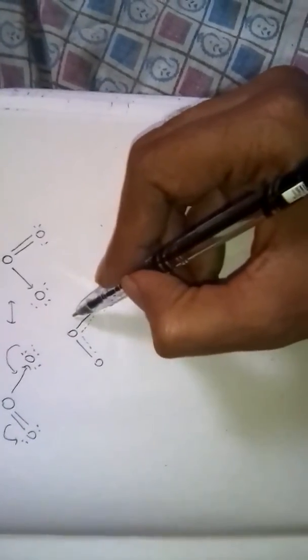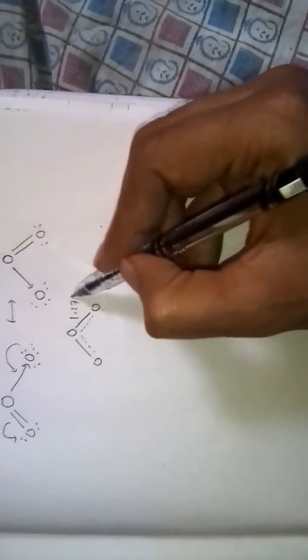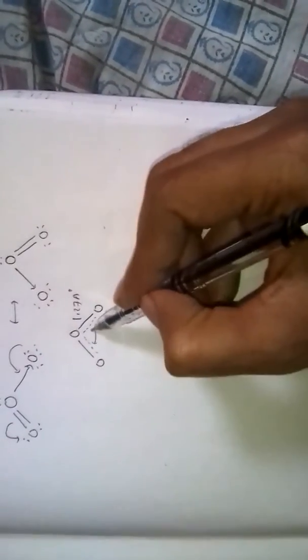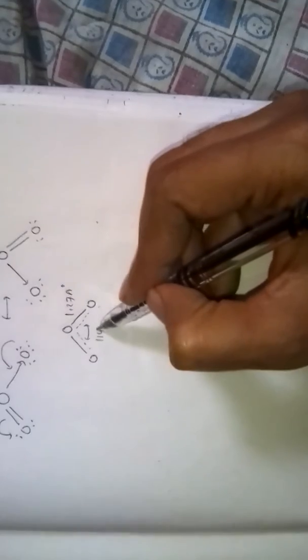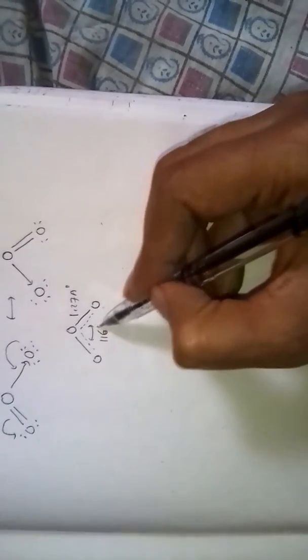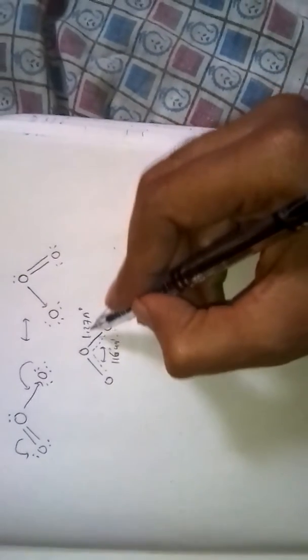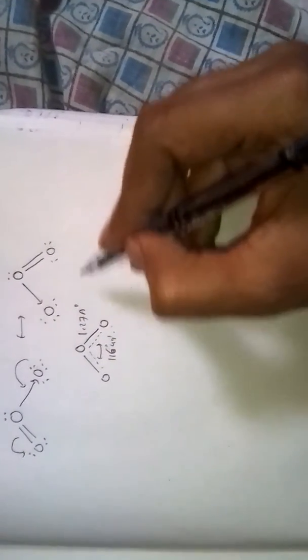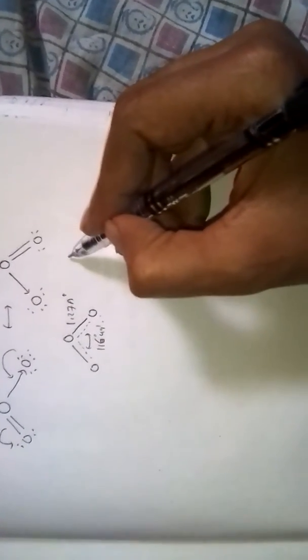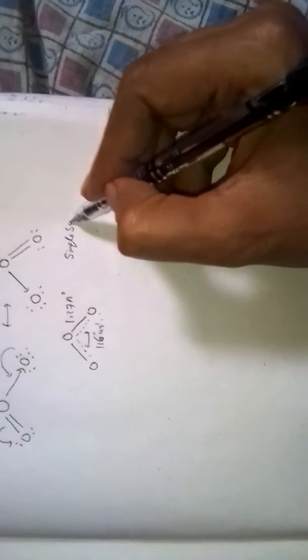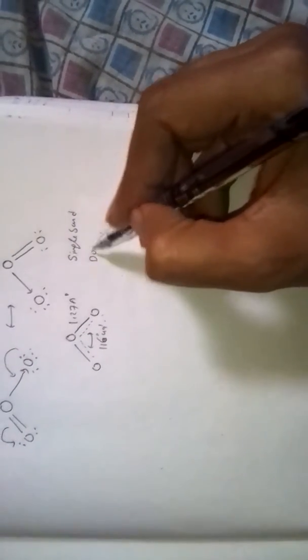Here O-O bond length is 1.27 angstroms. Here bond angle is 116 degrees 49 minutes. This bond length is 1.27 angstroms. It lies between single bond and double bond length.